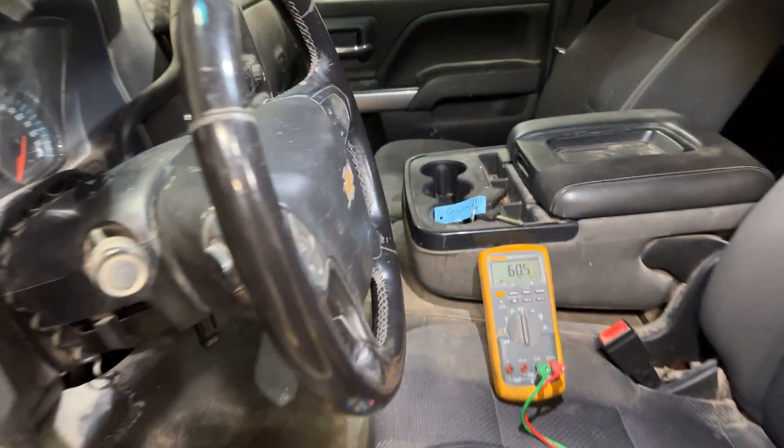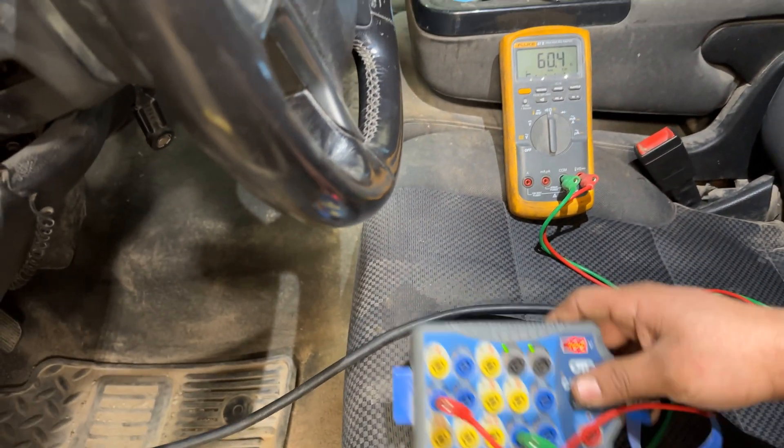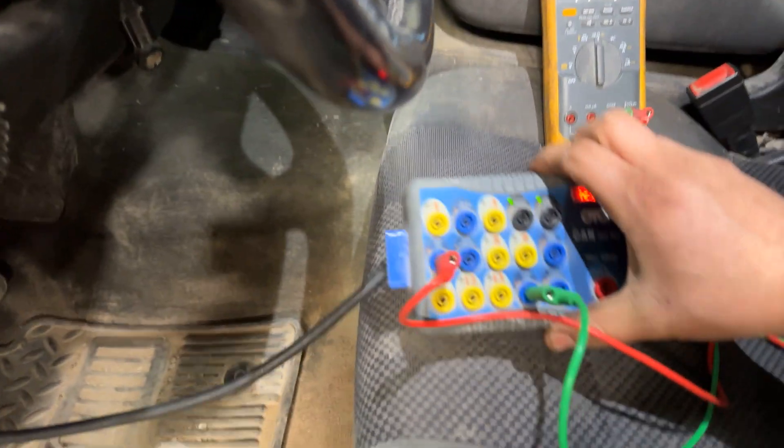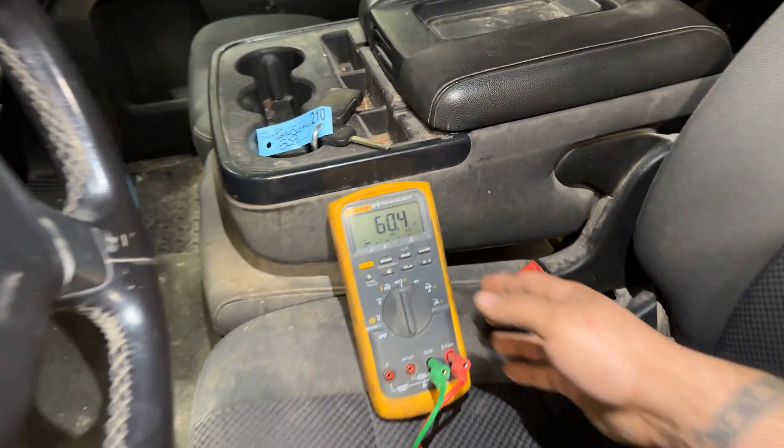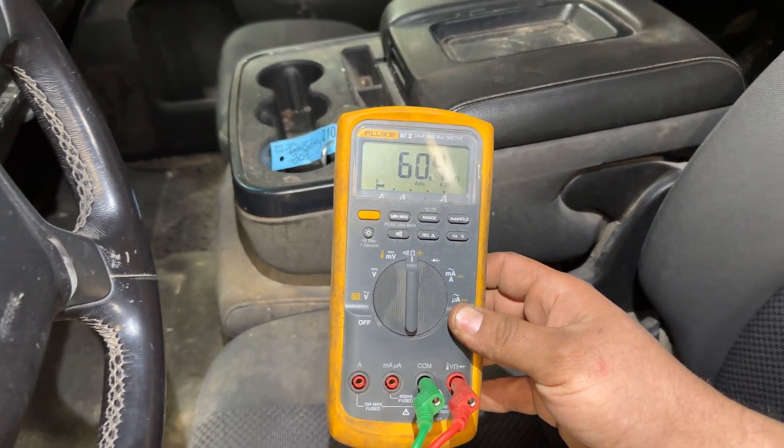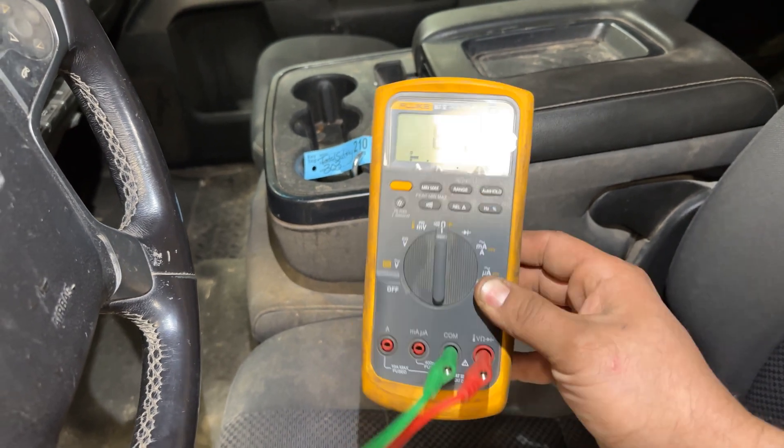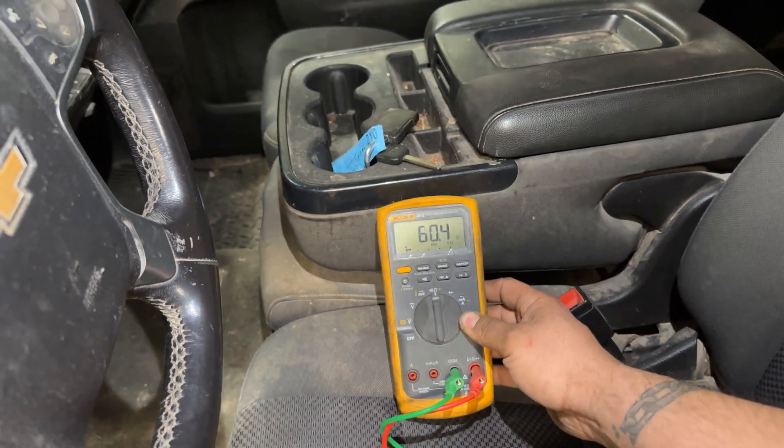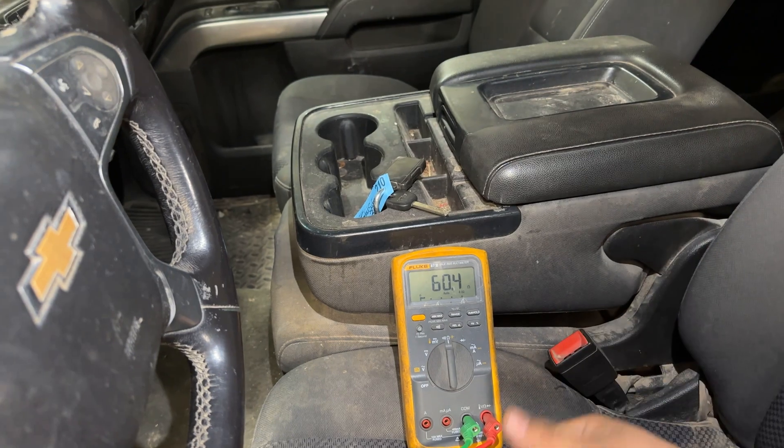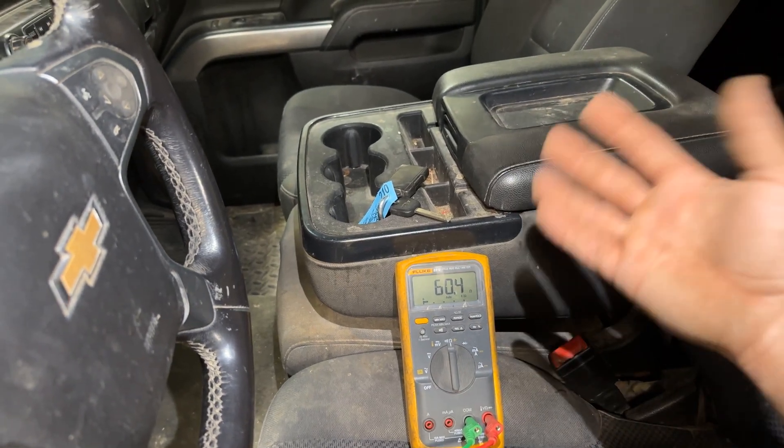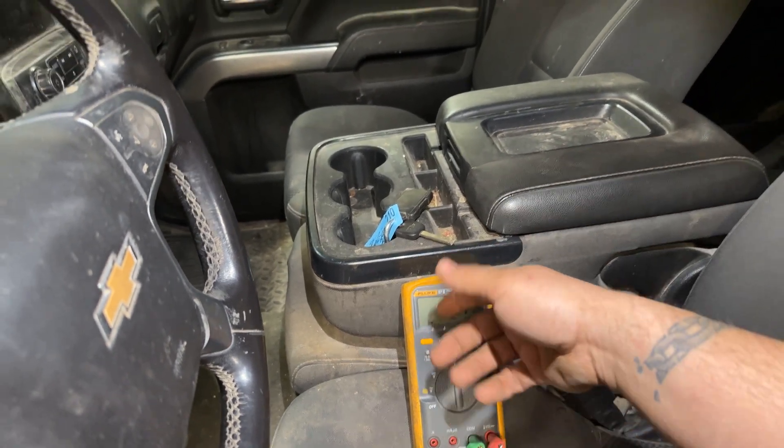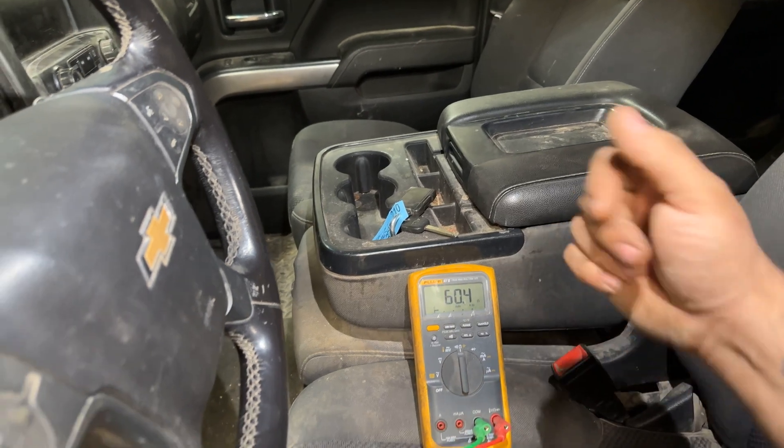All right guys, so now we're in the 2019 Chevy Silverado. Same measurement on the DLC, pins 6 and 14. Look what we got here: 60 ohms. Why is that? Because this one's in parallel. So let's go over here to the board and explain why they're different and why this one is good and the other one's good as well.